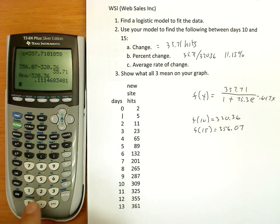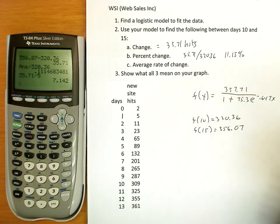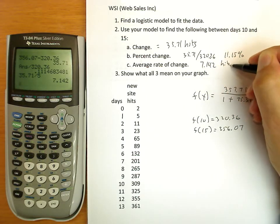Average rate of change. Well, it went up 35.71, and that was over five days. And we get a number of 7.142 hits per day.